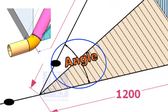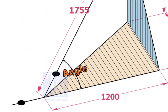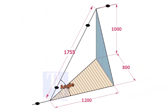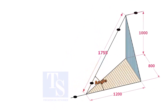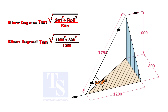Let us calculate the degree of the elbow, or the including angle. The formula is the root of the set and the roll divided by run, using tan inverse.